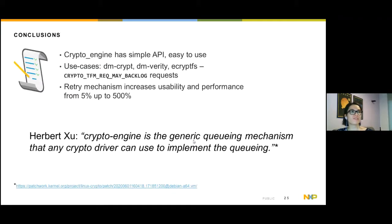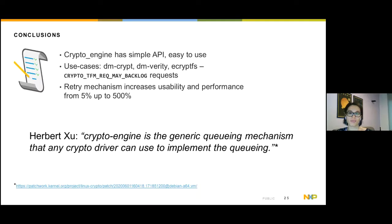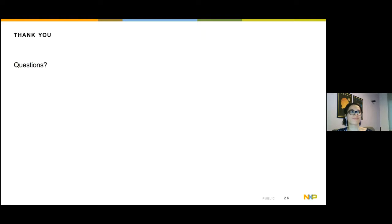To conclude, CryptoEngine is easy to use and the new features add performance up to 500 percent higher speed for some use cases. CryptoEngine is definitely the de facto queuing mechanism for backlogging requests and more — it can be used for disk encryption, file system encryption, DM integrity checking of block devices, and more. The crypto subsystem maintainer Herbert has stated that CryptoEngine is the queuing mechanism that any crypto driver can use to implement queuing. Thank you, and if you have further questions, let me know.